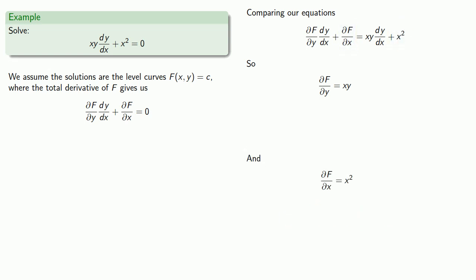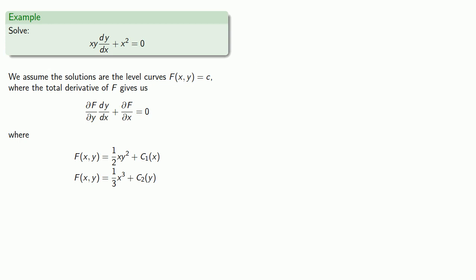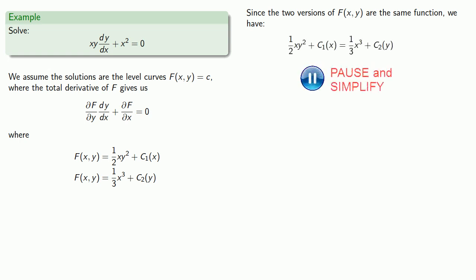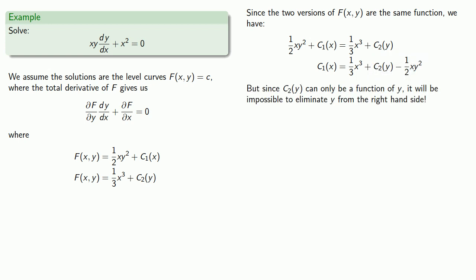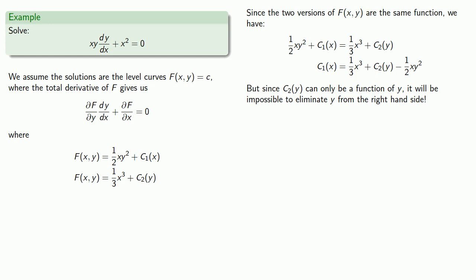So we anti-differentiate, remembering that our constants are in fact functions of the other variable. Since our two versions of f(x, y) have to be the same function, we can compare them directly, and we find a problem. c1 of x has to be a function of x only. Since c2(y) can only be a function of y, it will be impossible to eliminate y from the right-hand side. That means we can't find functions that make our differential equation exact — we don't have an exact differential equation.